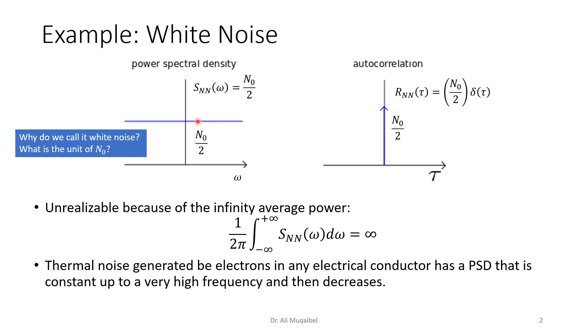But before we go there, let's answer: why do we call it n₀ over 2? Why not just call it n₀? Remember that the unit for the power spectral density, the unit for n₀, is watts per hertz. For a given bandwidth, remember that when we sketch the spectrum, we sketch the negative part and the positive part.